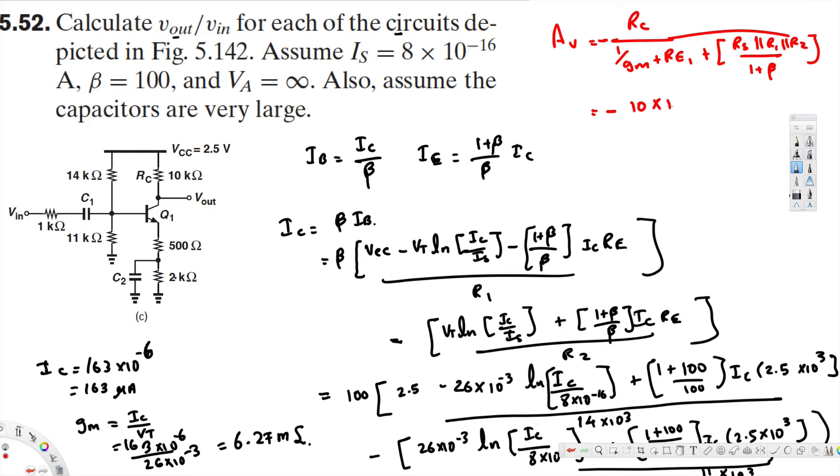10 times 10 to the power of minus 3 divided by 1 over the transconductance is 6.27, 6.27 times 10 to the power of minus 3, plus R_E1 is 500, plus R_E1 is 500.